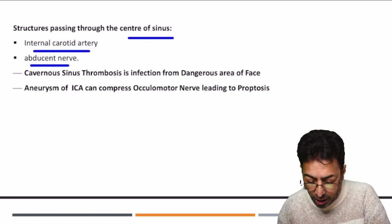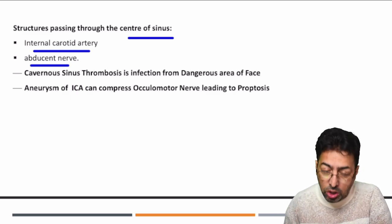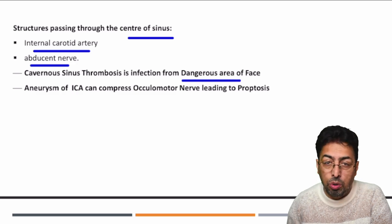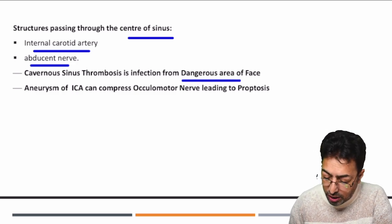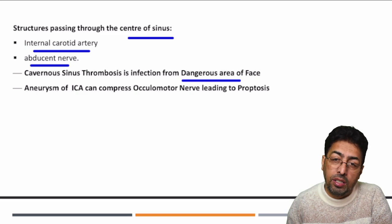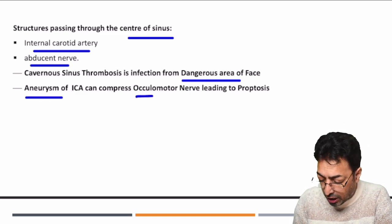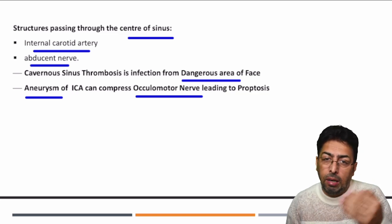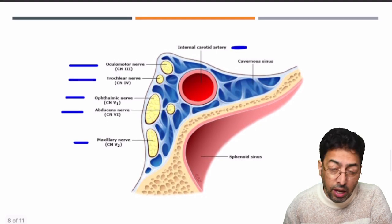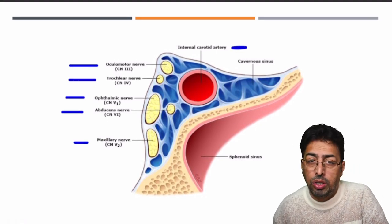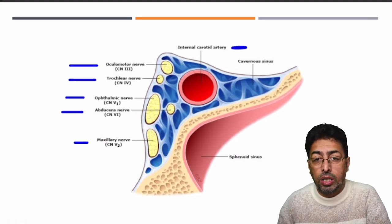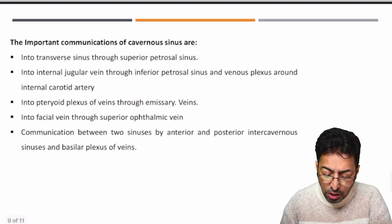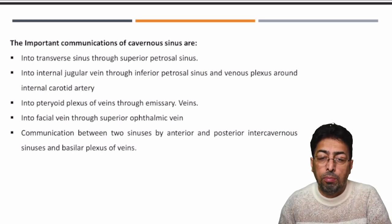Structures passing through the center include the internal carotid artery and the abducens nerve. Cavernous sinus thrombosis usually arises from infection in the dangerous area of the face. In cases of internal carotid artery aneurysm, the oculomotor nerve can be compressed, causing proptosis. Remember these details for image-based questions — what lies in the lateral wall, what lies in the center, and the location of the cavernous sinus.